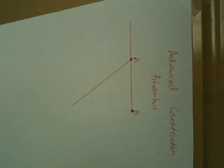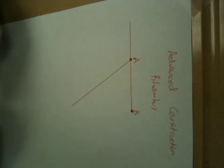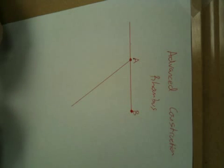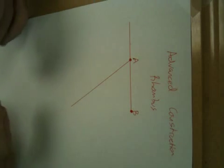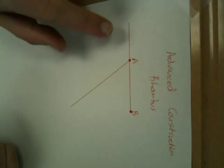All right, now we're going to do our first advanced construction, the construction of a rhombus. If you'll recall, a rhombus is a quadrilateral with four equal length sides. We're going to make use of the fact that two angles that are collinear are supplementary.